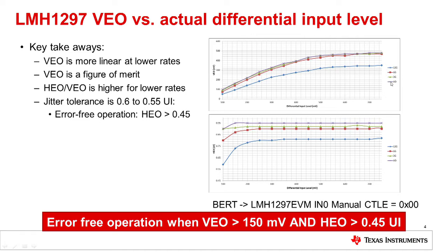At 6G, 3G, and HD versus higher data rates at 12G, VIEW linearity differs. Given the overall jitter tolerance for error-free operation, we need at least 0.45 UI of HUE. In summary, the main criteria for error-free operation is when we have VIEW greater than 150 millivolts and HUE greater than 0.45 UI.